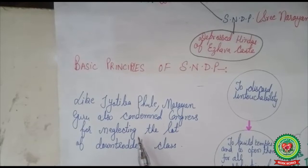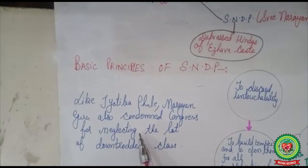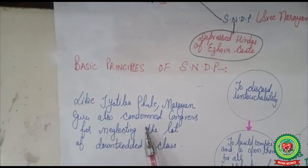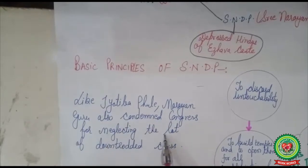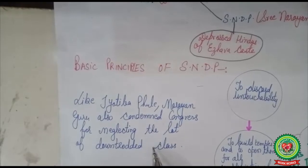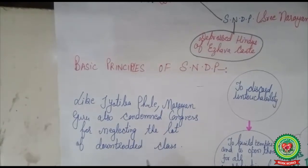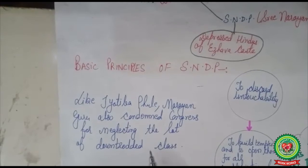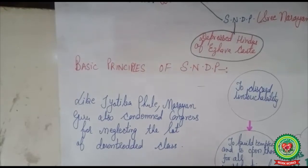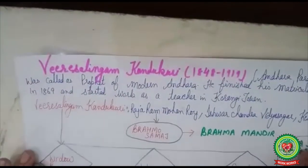Like Jyotiba Phule, Narayan Guru also condemned Congress for neglecting the lot of the downtrodden class. It was not that Congress was against lower-caste people, but at that time Congress had no link with the common people — it was an organization acting as a bridge between the British government and the educated class, largely in favor of British policies. This is why in its early years Congress was criticized by social reformers for not taking care of the interests of the oppressed classes, though with the passage of time Congress adopted the ideas of these reformers.